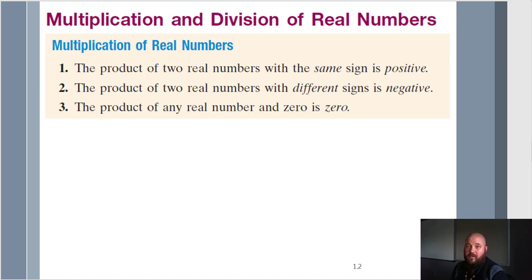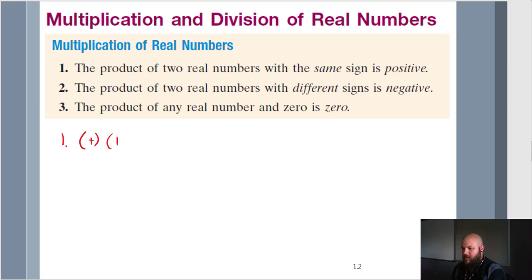Let's talk about multiplication of real numbers. Rule 1: the product of two real numbers with the same sign is positive. So if you have two positives or two negatives and you multiply them together, you're going to get a positive number. Positive times positive gives you a positive number.